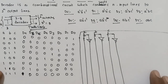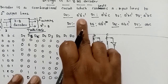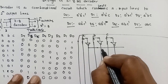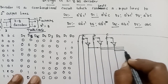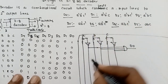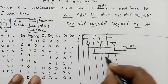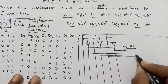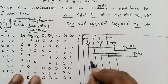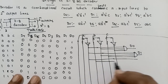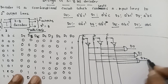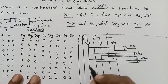For D0: A' B' C' — AND gate — this is for D0. For D1: A' B' C — A' B' C — AND gate — this is for D1. For D2: A' B C' — A' B C' — AND gate — this is for output line D2. For D3: A' B C — A' B C — this is for D3.